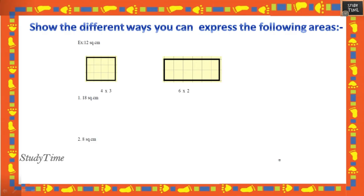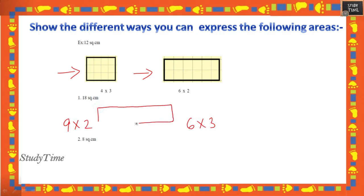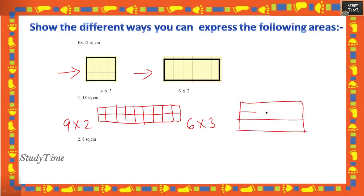Show different ways to express the following areas. For example, 12 can be expressed as 4 × 3 or 6 × 2. Similarly, 18 can be written as 9 × 2 or 6 × 3 — draw the corresponding picture for each. For 8, it can be 4 × 2 or 8 × 1. Draw the grid picture to represent each expression.